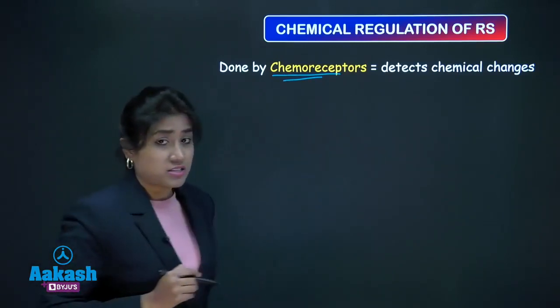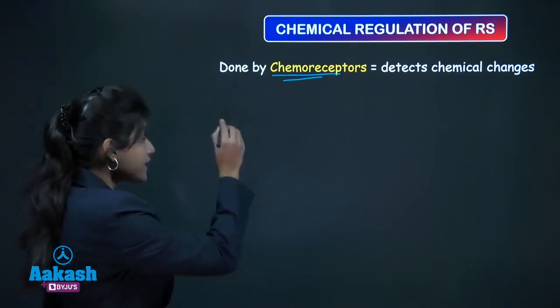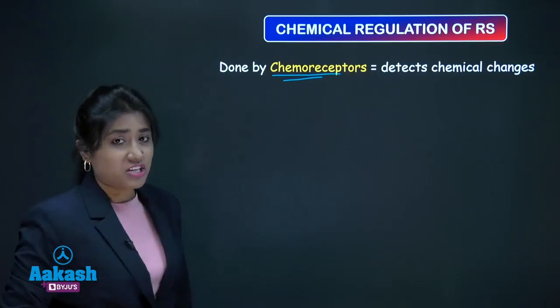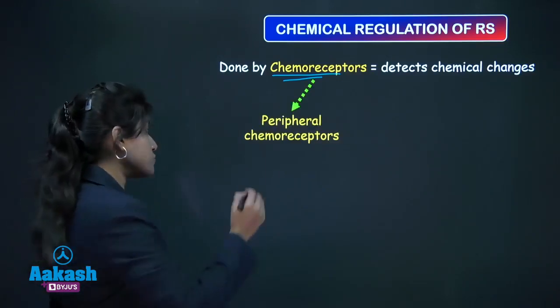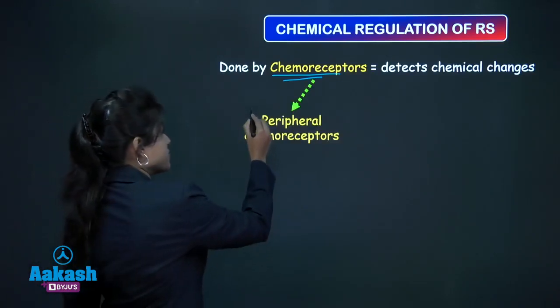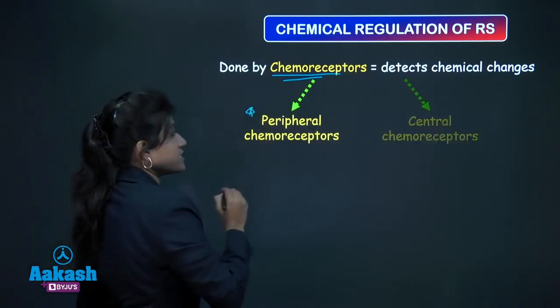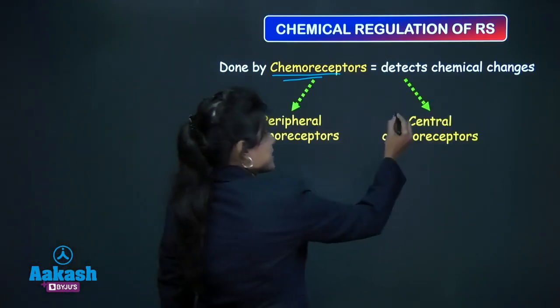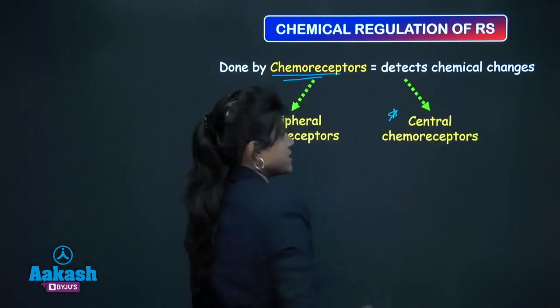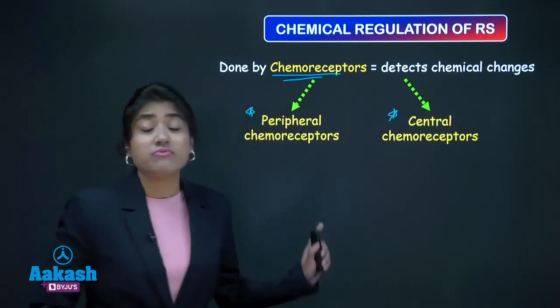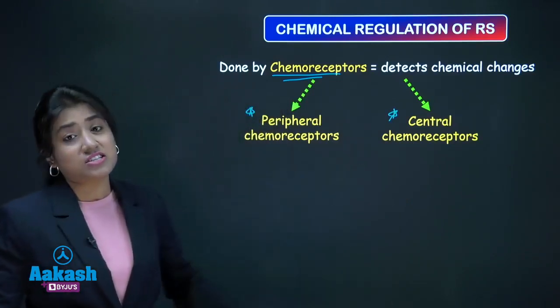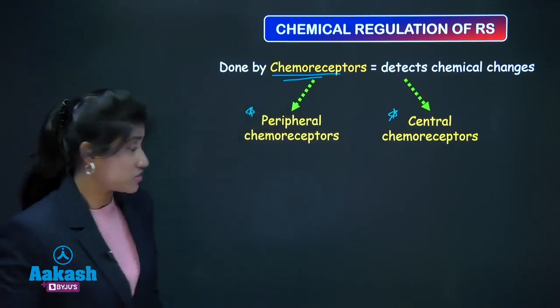Chemoreceptors in case of chemical regulation are of two types: peripheral chemoreceptors and central chemoreceptors.